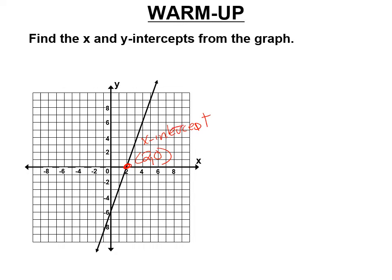And then we're going to do the y-intercept, which is right there. The y-intercept is the point 0, negative 6. So x-intercept is where it crosses the x-axis; the y-intercept is where it crosses the y-axis — where the line crosses.